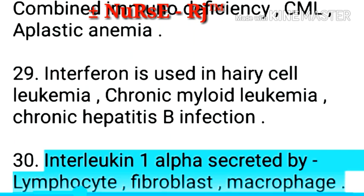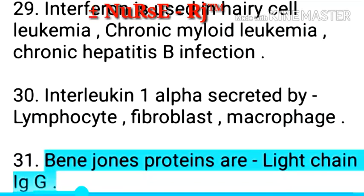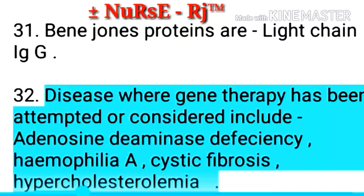Point 30: Interleukin-1 alpha is secreted by lymphocytes, fibroblasts, and macrophages. Point 31: Bence-Jones proteins are light chain IgG. Point 32: Diseases where gene therapy has been attempted or considered include adenosine deaminase deficiency, hemophilia A, cystic fibrosis, and hypercholesterolemia.